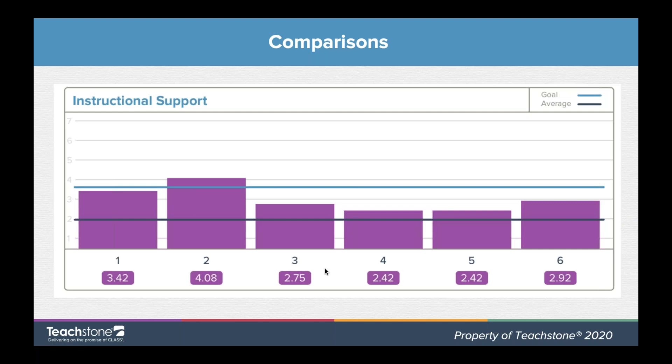Finally, a comparison bar chart focusing on instructional support domain scores for six classrooms. What's nice is the average line and the goal line. This display helps a coach or administrator see that in classrooms one and two, something more effective is happening. Not to call any teacher out, but to understand what's happening in those classrooms and how we can get that happening across the whole program.